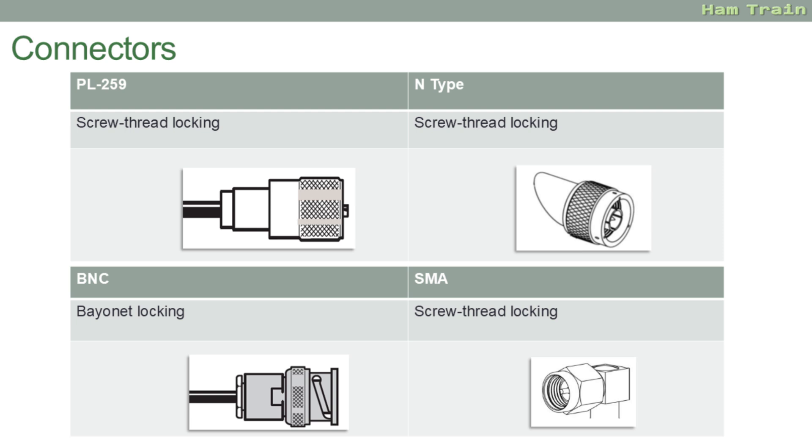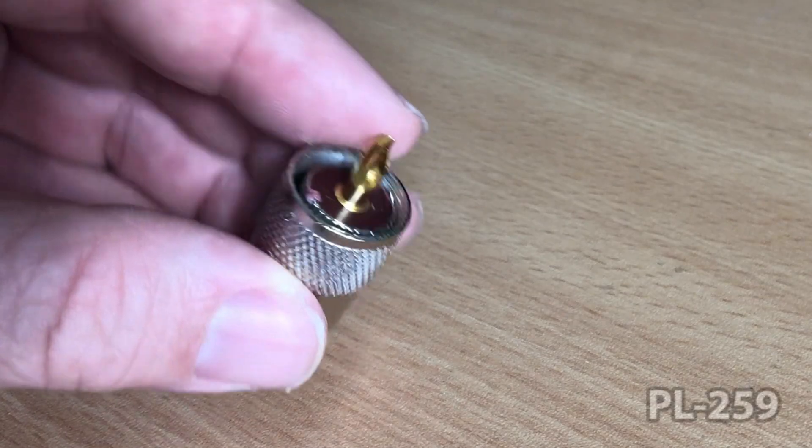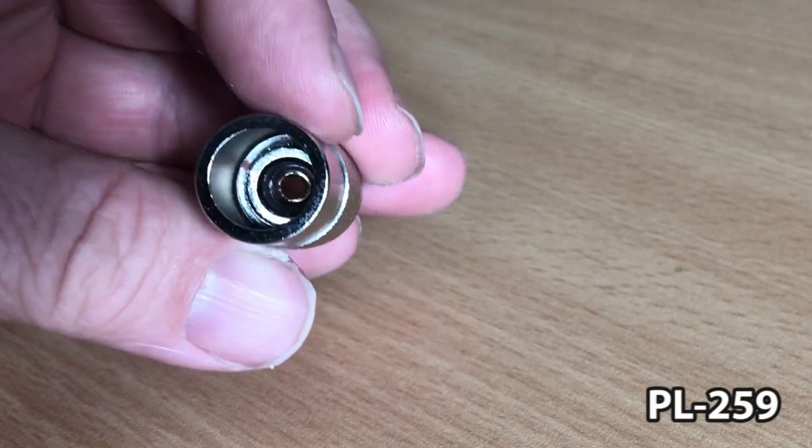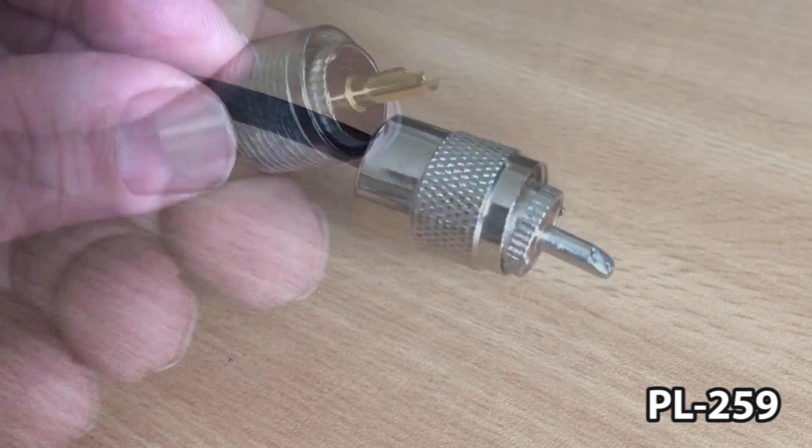Here's a short video showing some of the common connectors. Pictured here is the PL259, commonly used for HF.